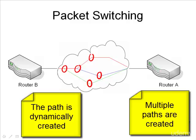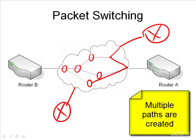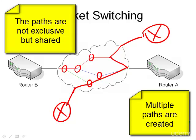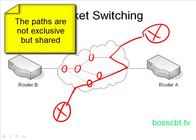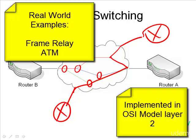Not only that, but these paths are not exclusive to the communication between router A and router B. In fact, we could have many other devices hanging off of this wide area network, sharing the infrastructure. So that's another big difference — it's not an exclusive path; these paths can be shared by many devices. Also, another big difference is that packet switching is implemented in layer two of the OSI model, whereas circuit switching is layer one. And whereas we had the PSTN for circuit switching, the big examples for packet switching are Frame Relay and ATM.